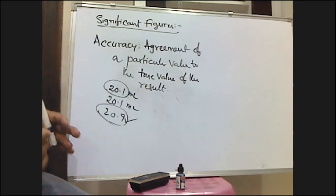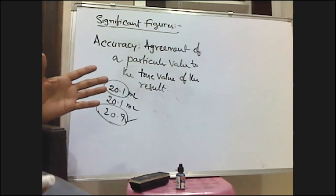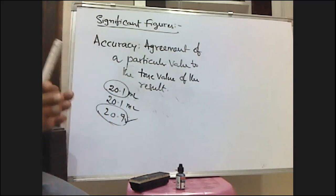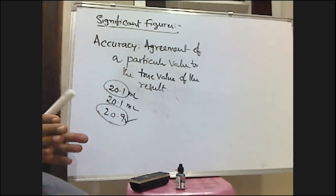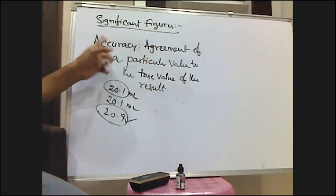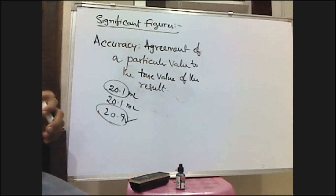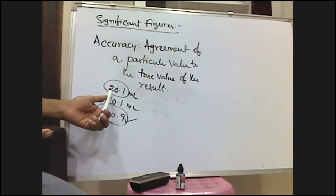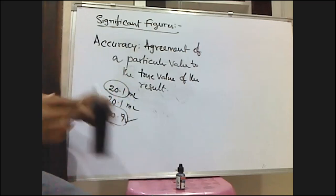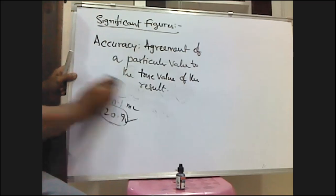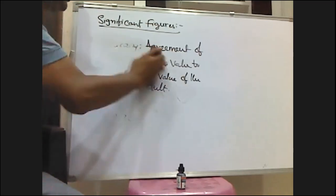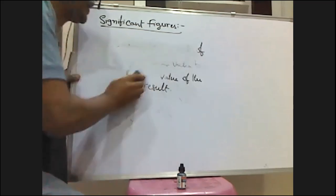Agreement of a particular value to the true value of the result is called accuracy. How close the experimental value is to the true value is indicated by accuracy. If it is very close, then we can say that the result is accurate. If it is not close, we can say it is not accurate.